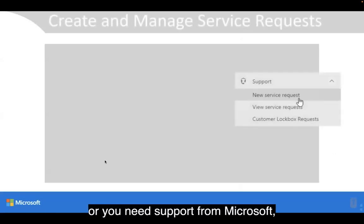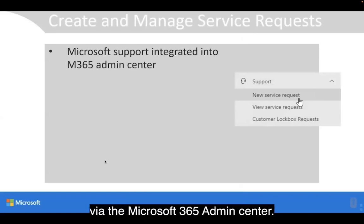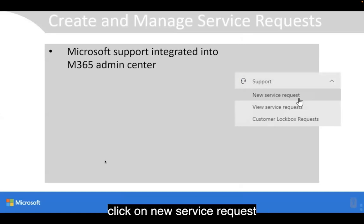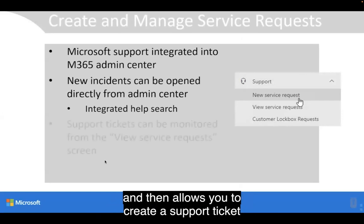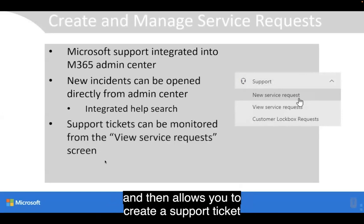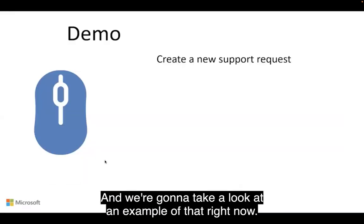When something goes wrong or you need support from Microsoft, you're going to want to create a service request. This can be done directly via the Microsoft 365 Admin Center. You just go to the Support section, click on New Service Request, and it gives you integrated search for Microsoft Help, then allows you to create a support ticket, which can then be monitored from the View Service Requests screen.